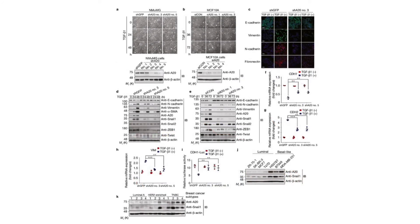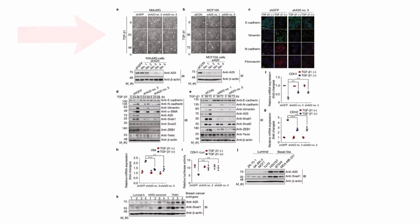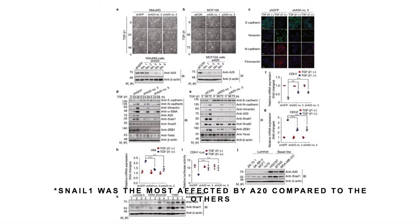In figure two, the goal was to see whether A20 actually played a role within highly metastatic breast cells. In parts A and B, TGF-beta-1 activity — which is related to the migration and metastasis of these cells — was examined. Furthermore, in parts D and E, among the downstream regulators of A20, which are SNAIL1, ZEB1, and TWIST, SNAIL1 seemed to be the only protein affected by the knockdown of A20.